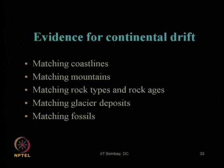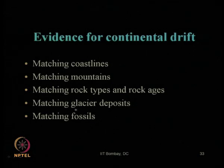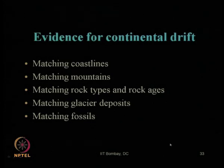In support of Wegener's continental drift theory, the evidences he proposed include: matching the coastlines of different continents, matching mountain ranges of different regions, matching rock types and the edges of those rocks at different continents, matching glacier deposits, and matching fossils available at various continents. If they match similarly, then one can say that at some point millions of years ago they were together and with time they got separated.